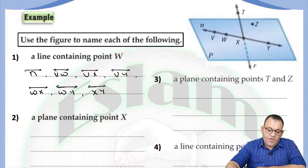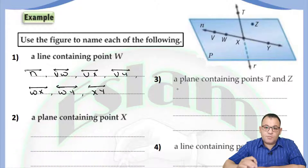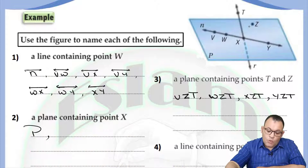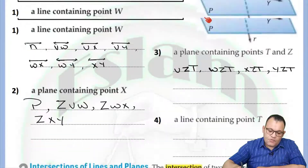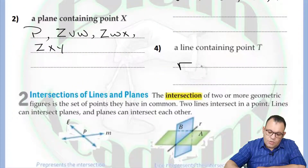So we can say we have a plane VZT, or WZT, or XZT, or YZT. The main point is that you cannot choose any three points that are collinear. The plane which contains point X — X lies in plane P. We can name the plane with a capital letter, or choose any three non-collinear points: ZVW, ZWX, or ZXY. We need the line that contains point T — that is line R, or line TX.